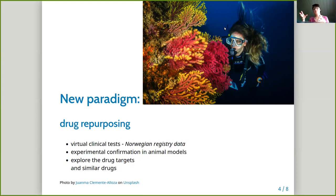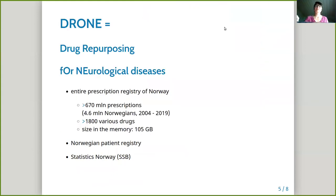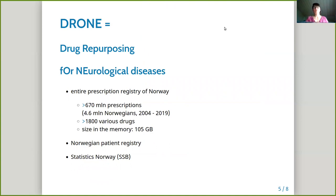We can find which drugs are significantly changing the risk of a specific disease, take these drugs and test them on cells or on animals. And if we find some positive answers, we can explore these drugs even more computationally. The project is called DRONE — Drug Repurposing for Neurological Diseases. We have the entire prescription registry of Norway, containing more than 600 million prescriptions on more than 4 million Norwegians, with more than 1800 various drugs.